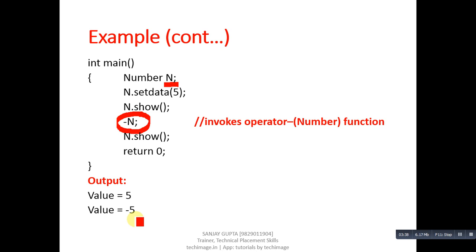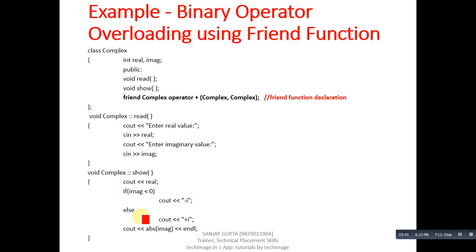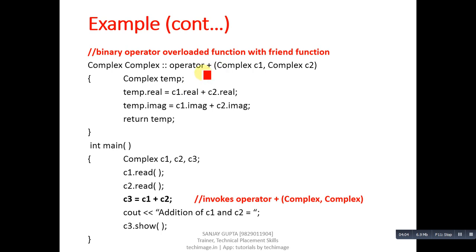The second example is binary operator overloading using friend function. The class is named 'complex' with two data members: real and imaginary. The read, show, and operator+ functions are declared. The read function reads real and imaginary values, and show prints them on the console. The overloaded plus function receives two explicit arguments c1 and c2, and adds their real and imaginary values into a temp object.